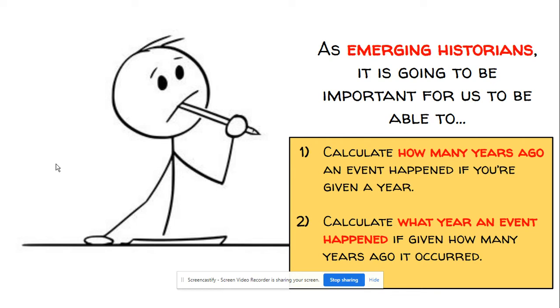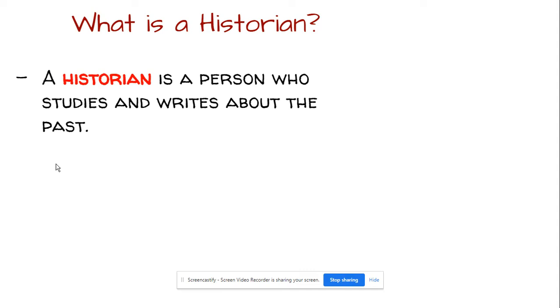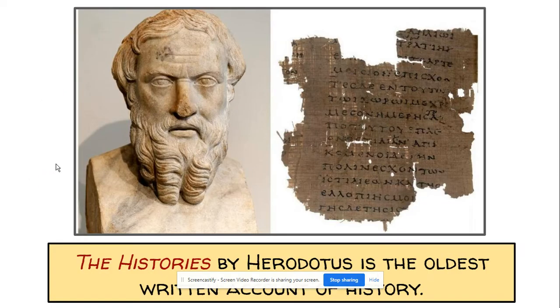As an emerging historian, the first place we have to start is talking about what is a historian. A historian is a person who studies and writes about the past. We can credit this profession with developing under the guidance of a man named Herodotus. Herodotus was an ancient Greek scholar and is generally credited with being the world's first historian. He traveled throughout the Mediterranean region, collected stories, interviewed people, and compiled these into a book we today call the Histories. This is generally credited with being the world's oldest written account of history.